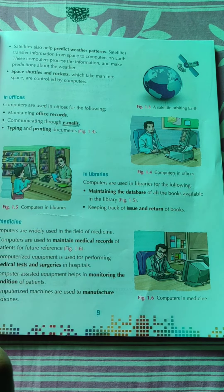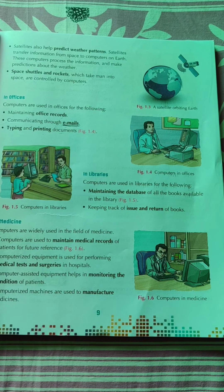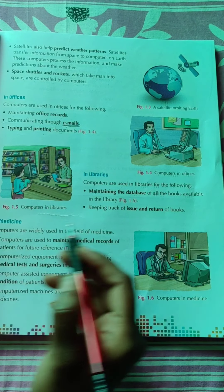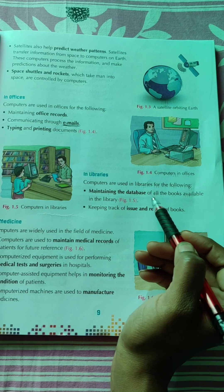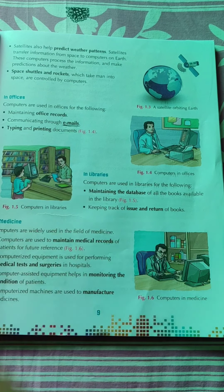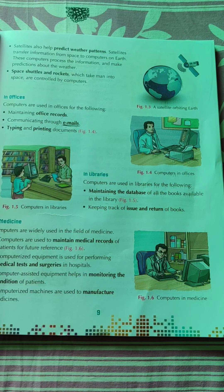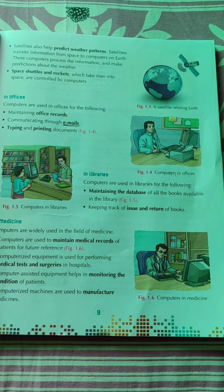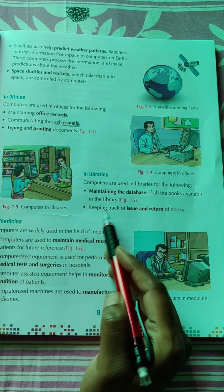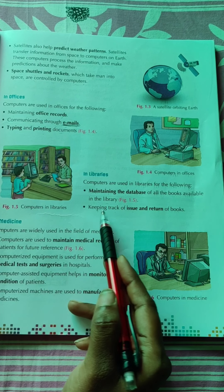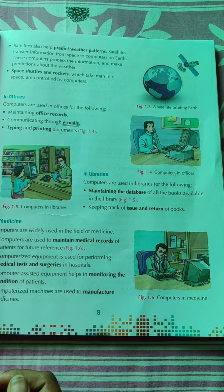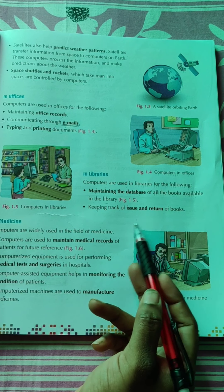Computers are used in libraries for: maintaining the database of all books available in the library — jaise kunse publication ka book hai, kunsi class ka hai, kaunsi language ka hai — aur keeping track of issue and return of books. Kis ne book liya, kis ne return diya — yeh sab computer mein maintain kiya jata hai.